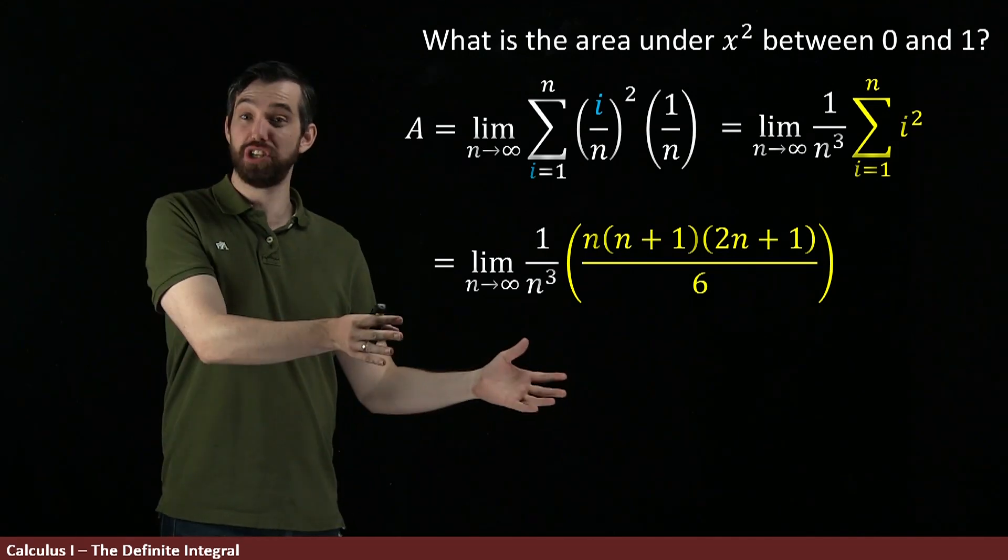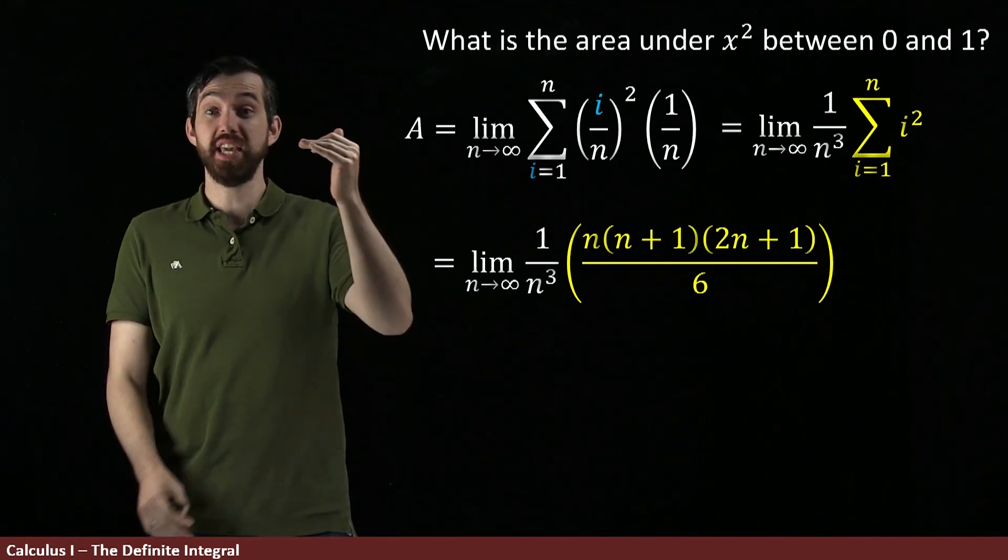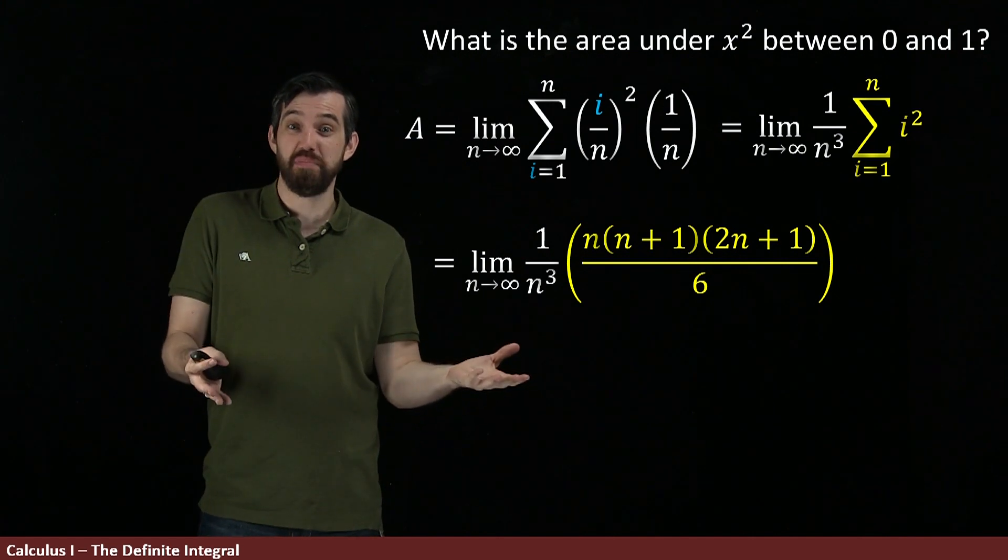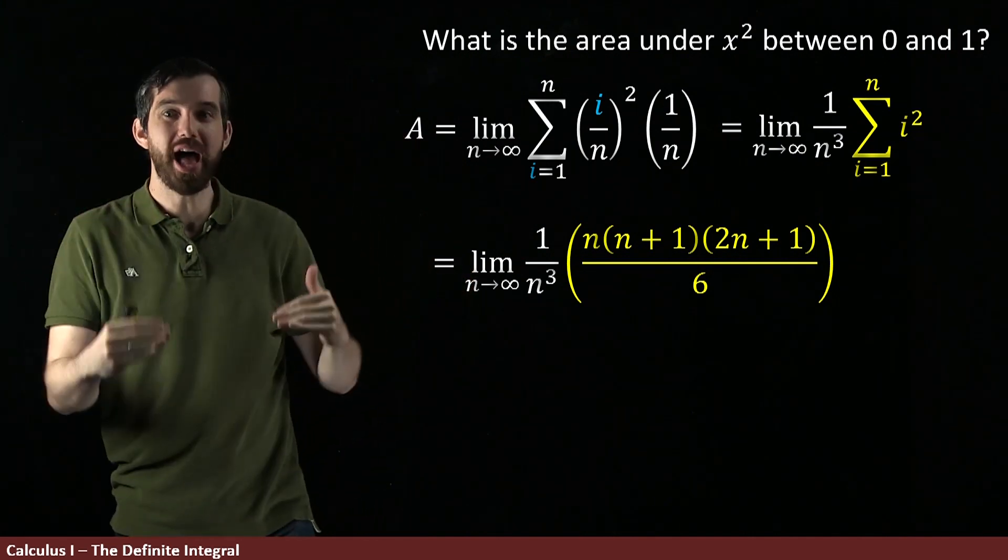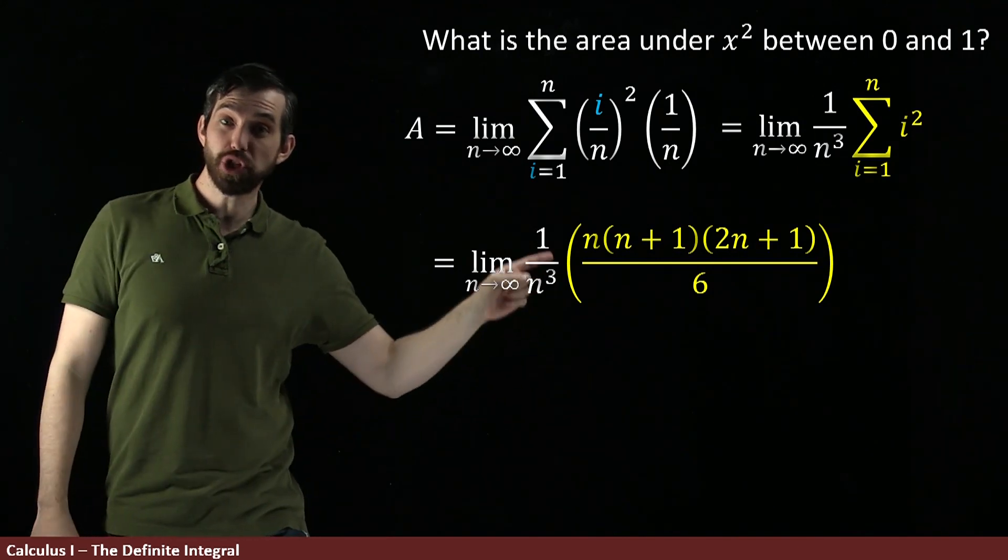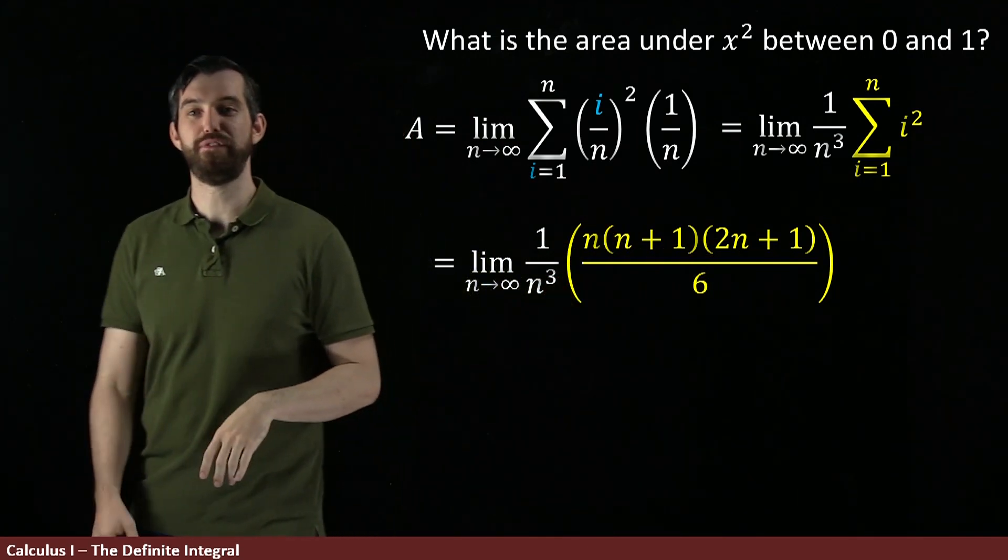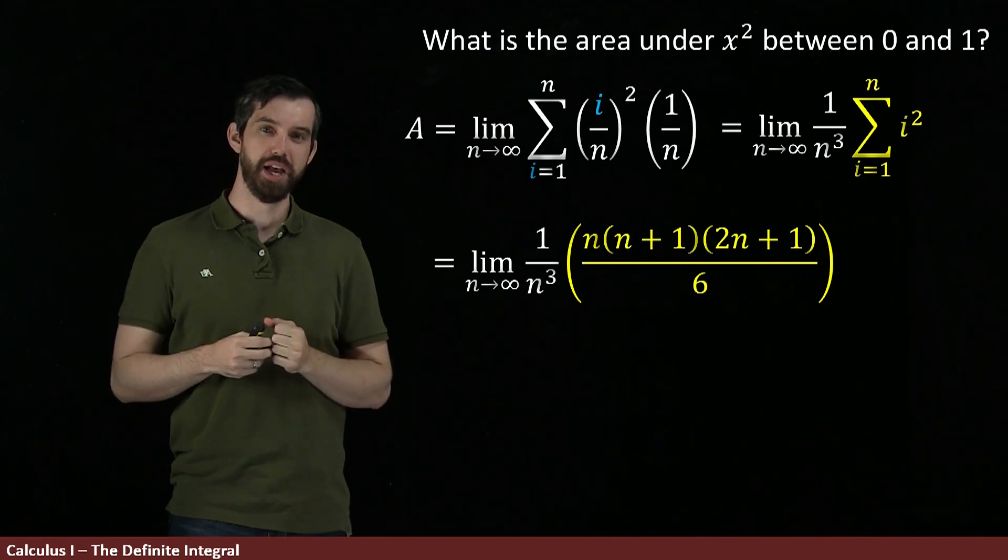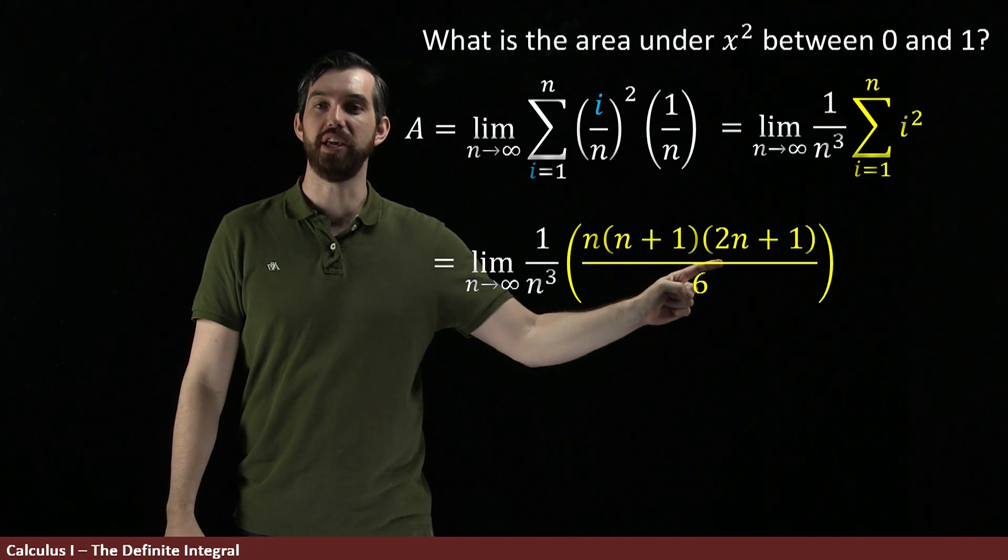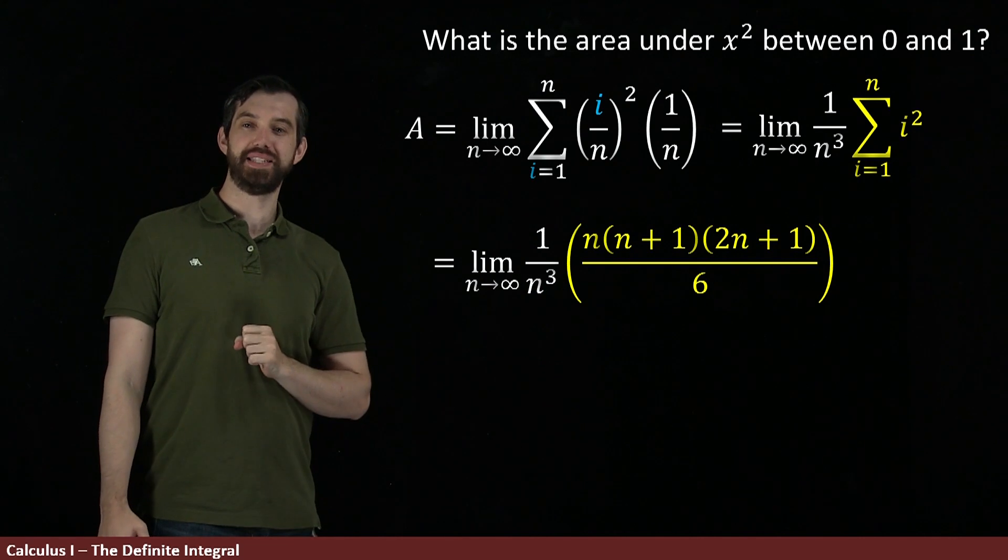Alright, so let's actually try and compute this limit. This is a limit that we should know how to do. It is a polynomial on the top and a polynomial on the bottom, and we can ask: if we're taking a limit at infinity, what's the highest power on the top and the highest power on the bottom? The bottom is pretty easy, just n cubed. And on the top here, there's an n, there's an n plus 1 and there's a 2n plus 1. So if I just look at the multiplication of those out, the highest power is going to be n cubed, and its coefficient is 2. Factoring in the divided by 6 that I have, what I get is 2n cubed on the top.